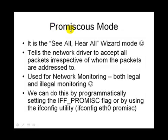Let's have a look at promiscuous mode before we move into raw sockets. Promiscuous mode is the see-all, hear-all wizard mode - the network card starts accepting all packets it can see, regardless of whether they are destined to it or not. This is currently used by network monitoring tools, but of course a hacker could also use it to see all packets traversing the network. On Linux, promiscuous mode can be enabled programmatically by setting a flag on the device using an IOCTL - that flag is IFF_PROMISC. An easy command line approach is using ifconfig: running 'ifconfig eth0 promisc' places the eth0 device into promiscuous mode, causing it to start listening to all packets.